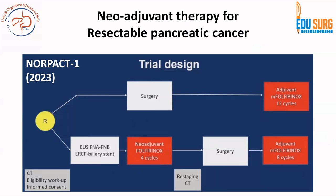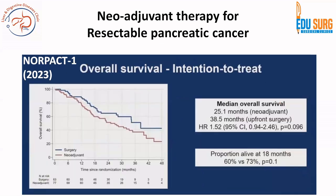One key trial to know is NORPACT-1 from 2023, which compared the standard of care — surgery followed by adjuvant therapy (Arm 1) — versus a neoadjuvant concept involving restaging CT, biliary drainage if needed, four cycles of neoadjuvant therapy, then surgery and adjuvant therapy. The data showed median OS was actually higher with upfront surgery, and the proportion alive at 18 months was 73% with upfront surgery versus 60% with neoadjuvant therapy. NORPACT-1 was therefore a negative trial for neoadjuvant therapy in resectable pancreatic cancer.